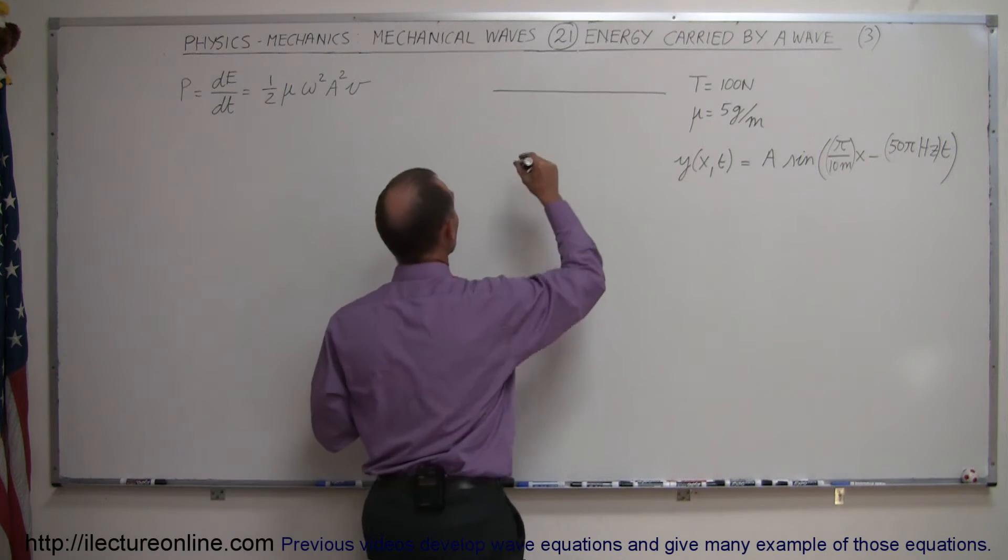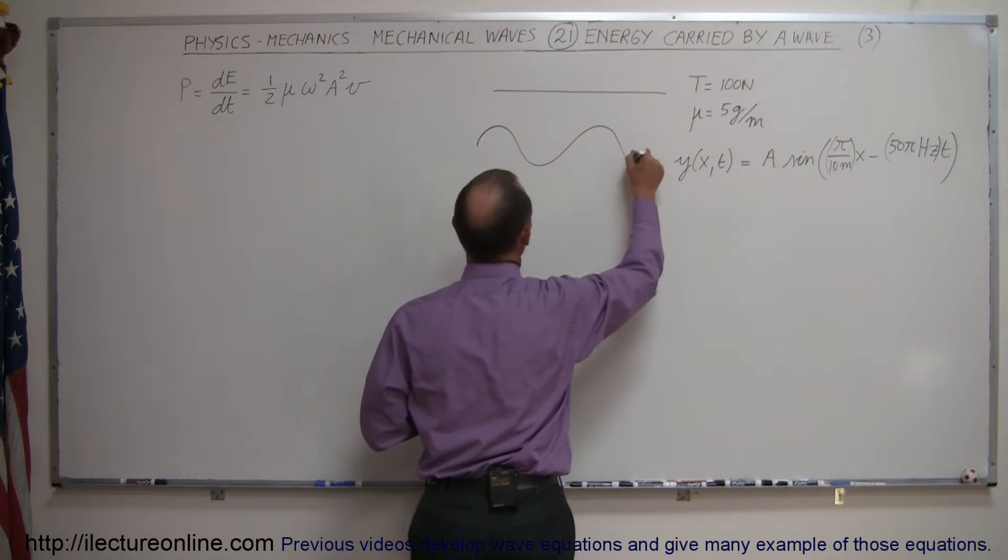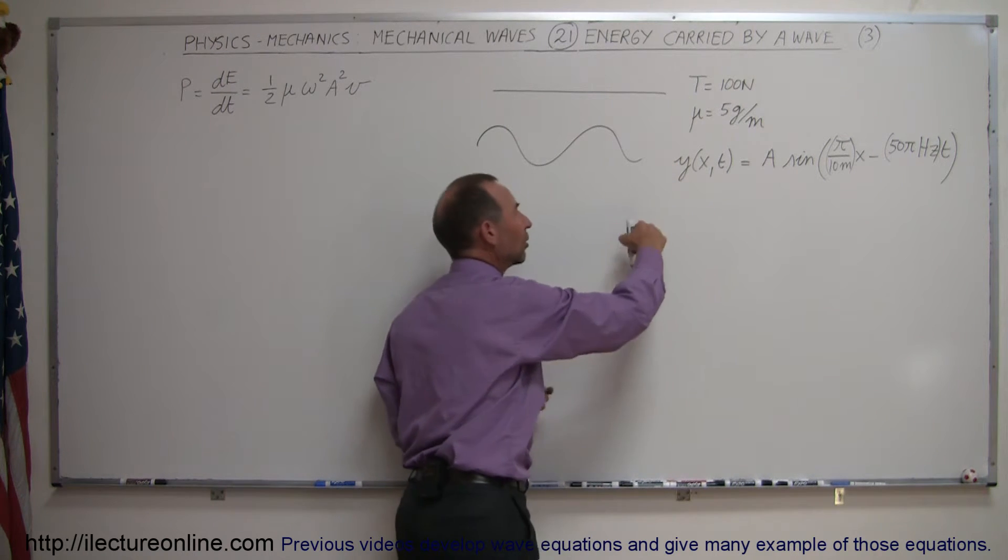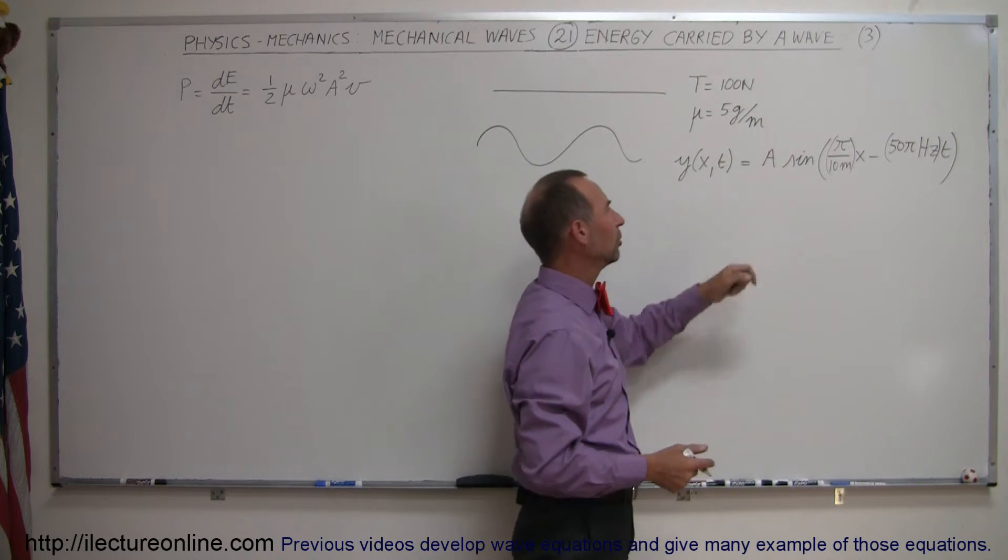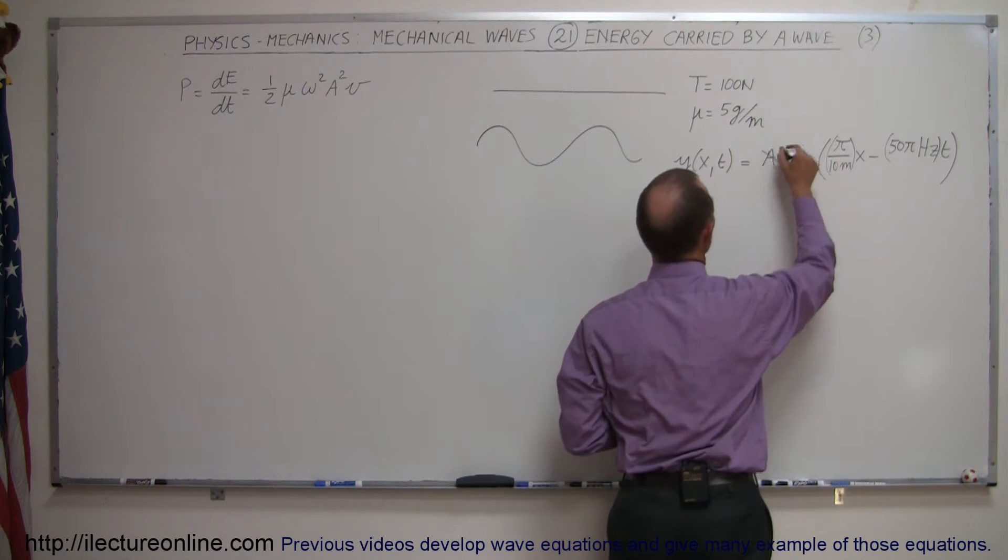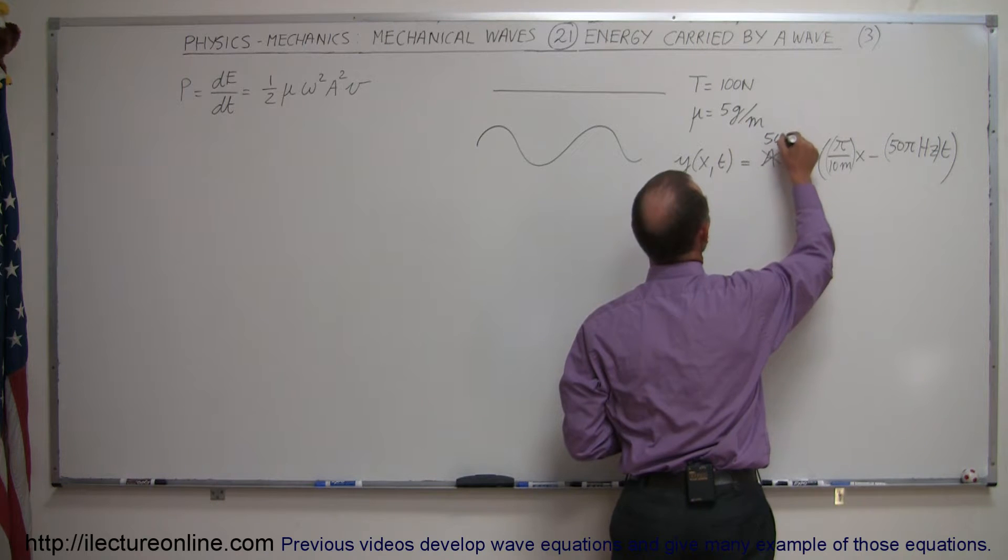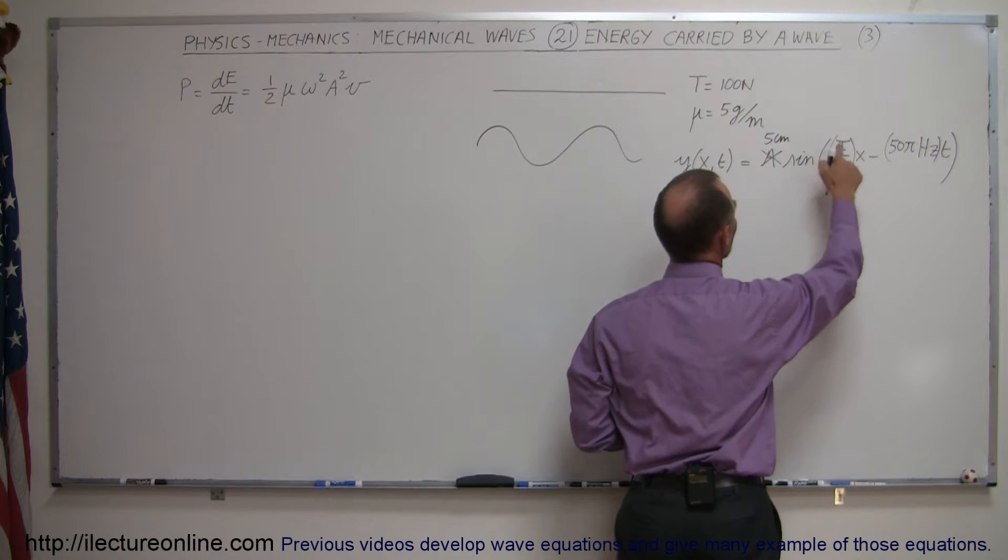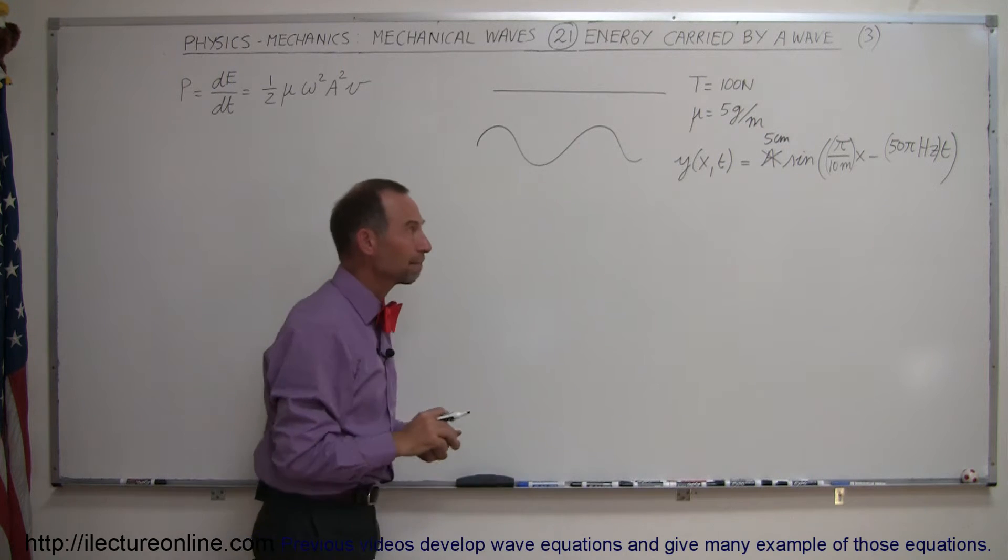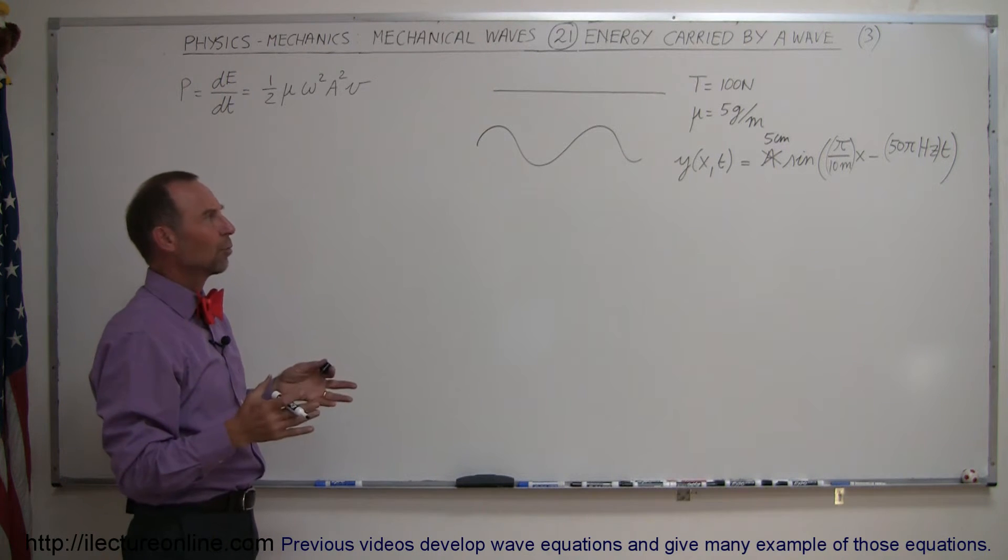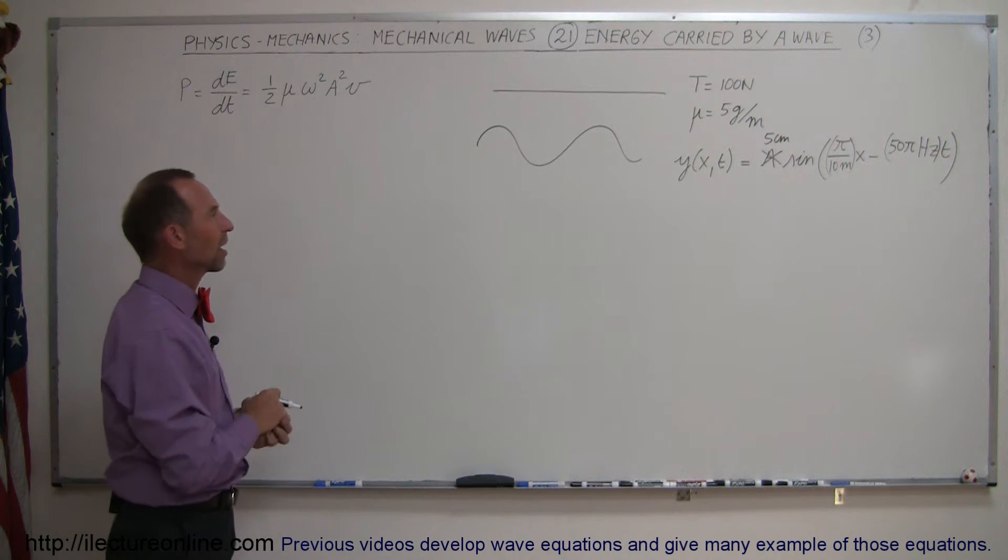And the wave equation that describes the wave that's going to be traveling along that string here, y, the displacement of y with respect to x and t is equal to some amplitude. Of course, we need to put some amplitude in there. So let's say it's a 5 centimeter amplitude times the sine of pi over 10 meters x minus 50 pi hertz times time. So that describes the wave. Now, how much energy is this wave carrying?